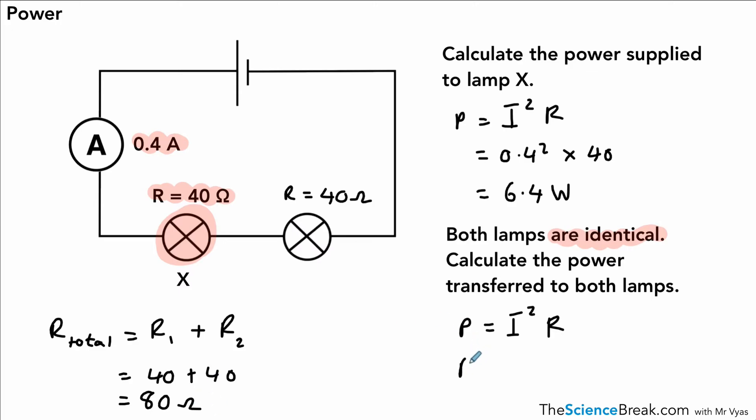And that gives us a value of 80. So we've got P is I squared R. 0.4 squared times 80. And if we do the calculation, we get an answer of 12.8 watts. So that's the power transferred to both lamps in this circuit.